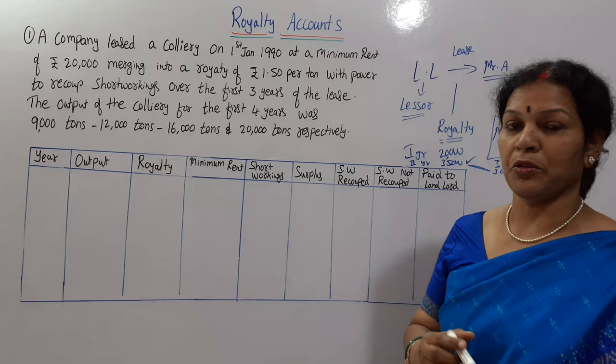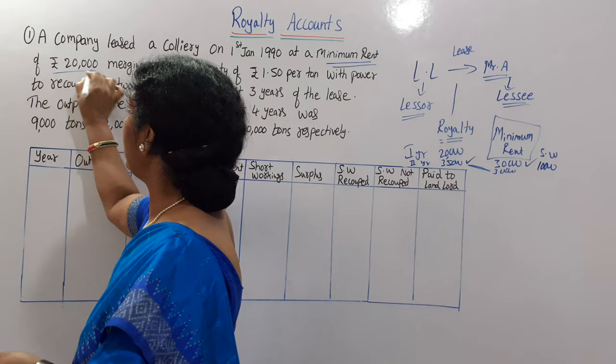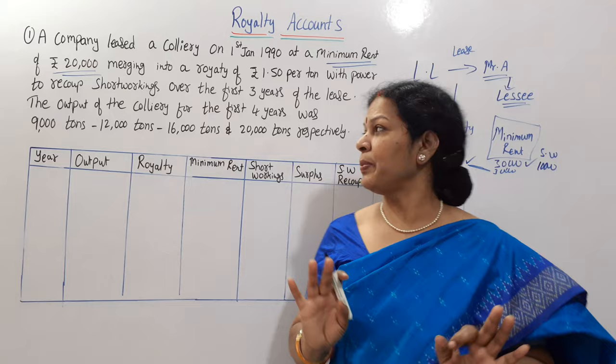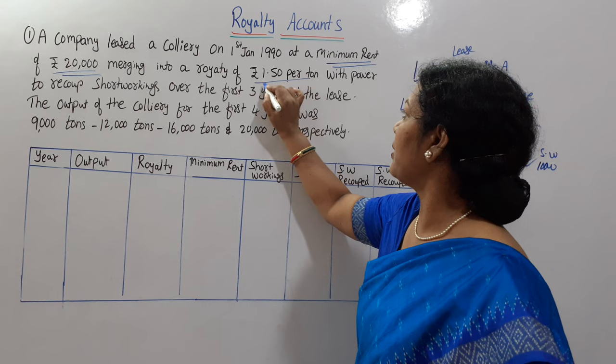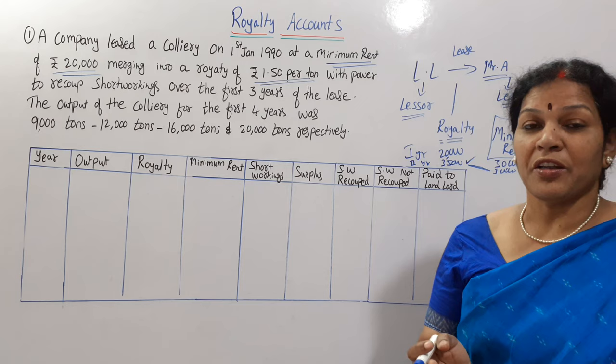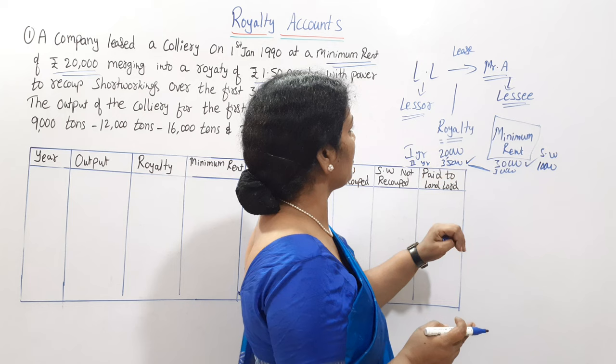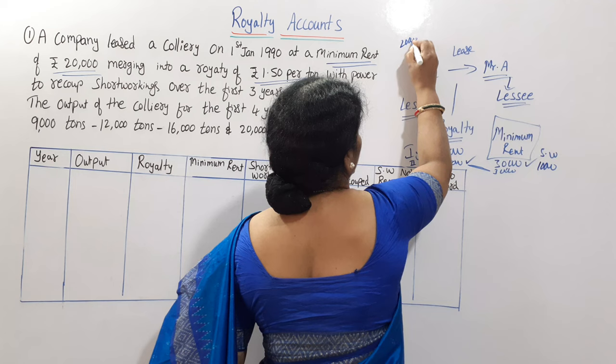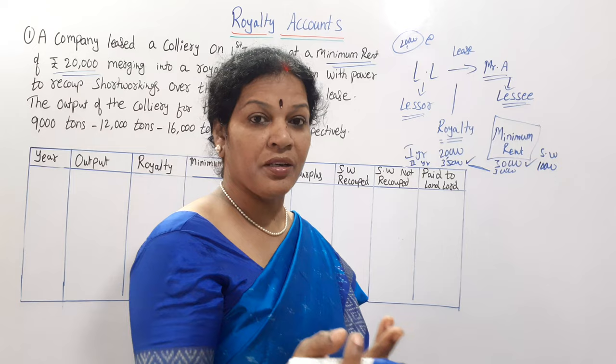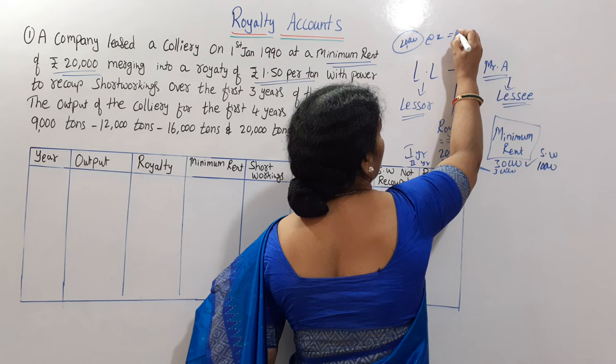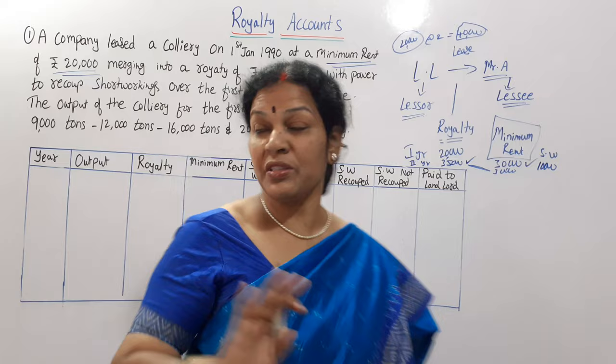Now let's see the problem. A company leased a colliery on 1st January 1990 at a minimum rent of 20,000 rupees — that is the minimum the lessee has to pay regardless of production. The royalty rate is 1 rupee 50 paisa per ton. The power to recoup short workings is over the first three years. If any short workings arise, they must be recouped within the first three years of the lease. The output of the colliery for the first four years is given.